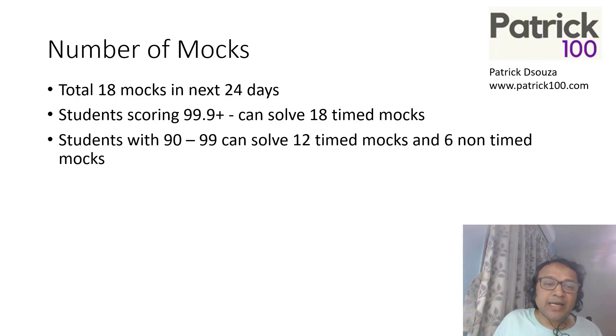For students scoring less than that, say 90 to 99 as a percentile, I recommend 12 timed mocks and 6 non-timed mocks. For people who are in between 99.9 and 99, can do anything between 18 and 12 timed mocks. So, vary it accordingly. Normally, a person who is scoring high will tend to write more timed mocks.